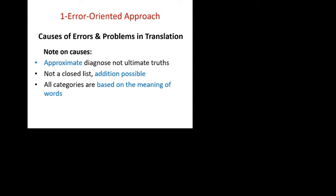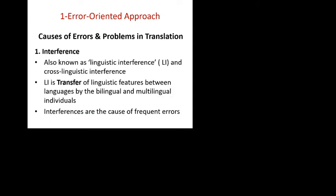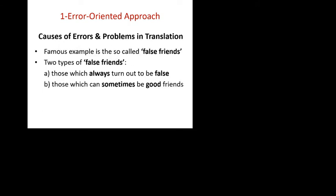Let's start with interference. What do we mean by interference? There are alternative terminologies used: linguistic interference, LI in short, and cross-linguistic interference. Linguistic interference involves two languages at least. Linguistic interference means transfer of linguistic features between languages by bilingual and multilingual individuals. Interference is a cause of frequent translation errors.